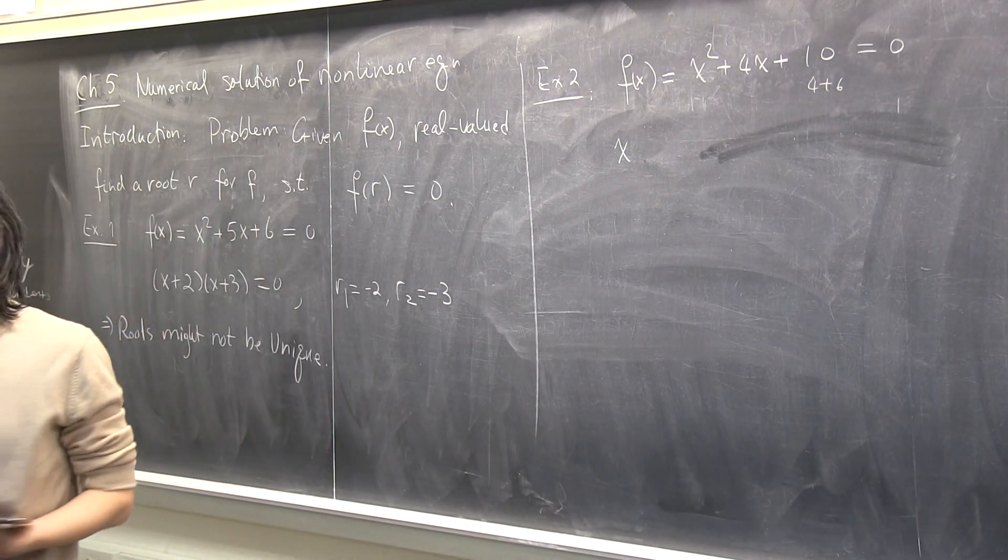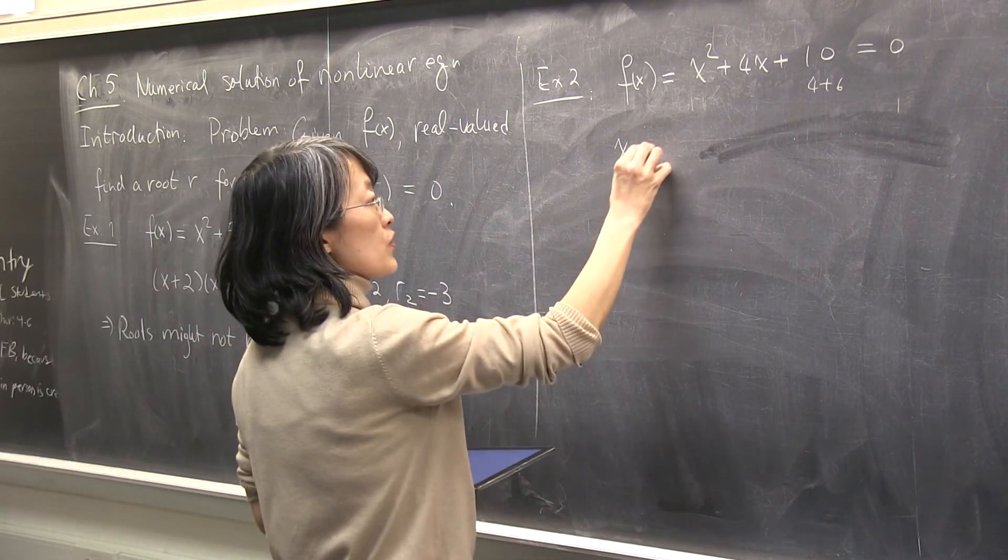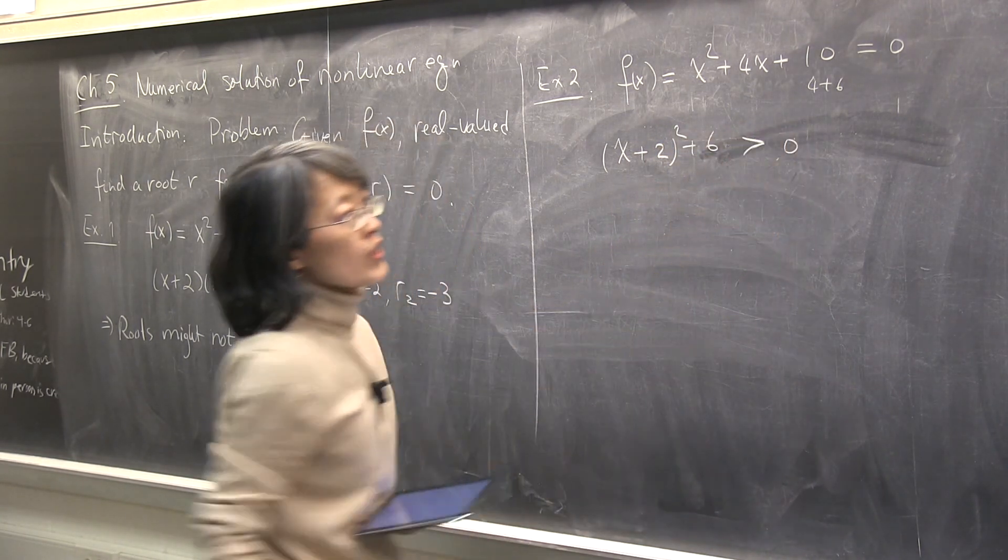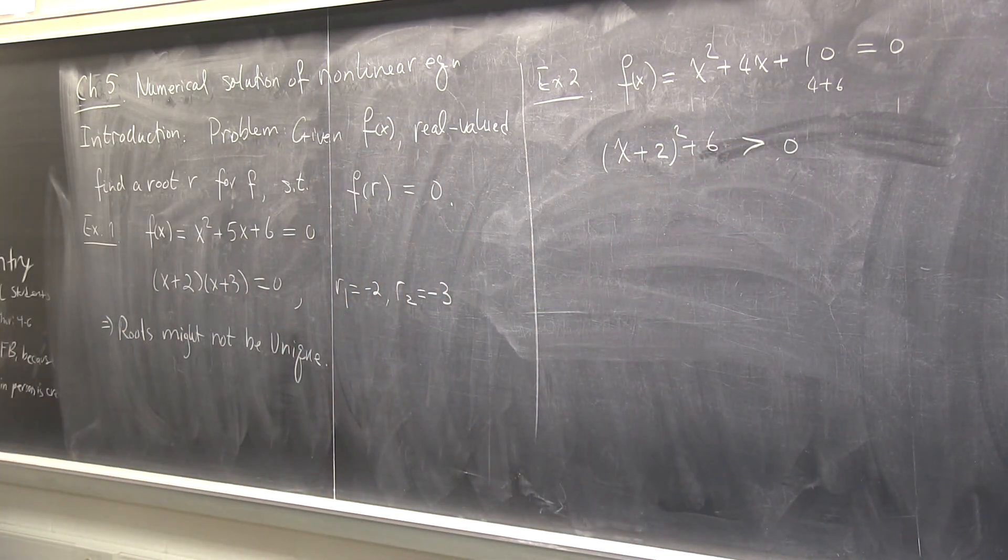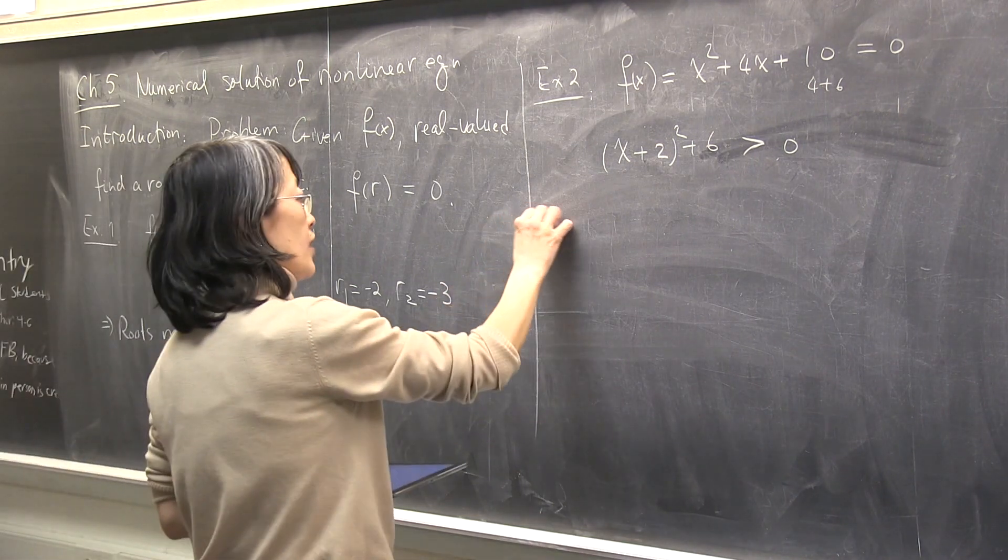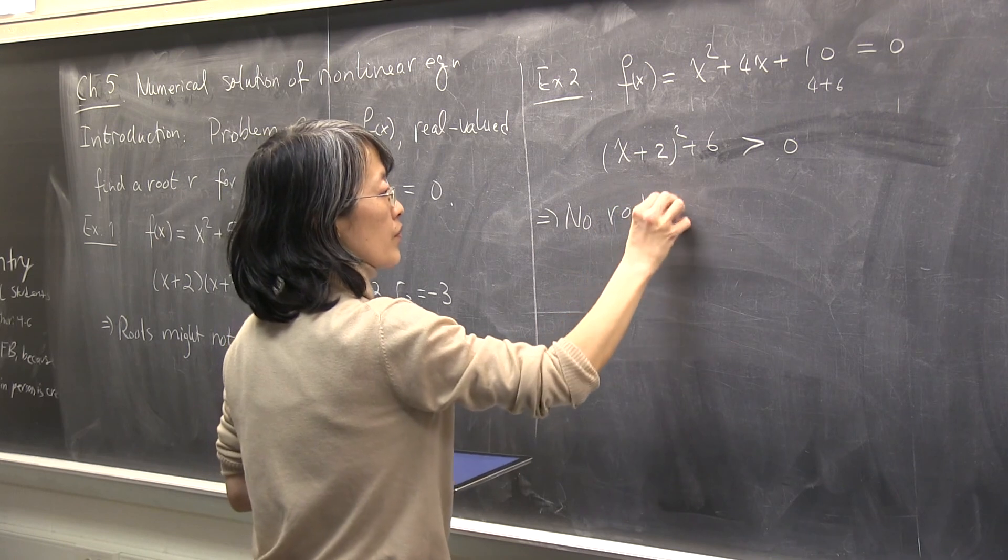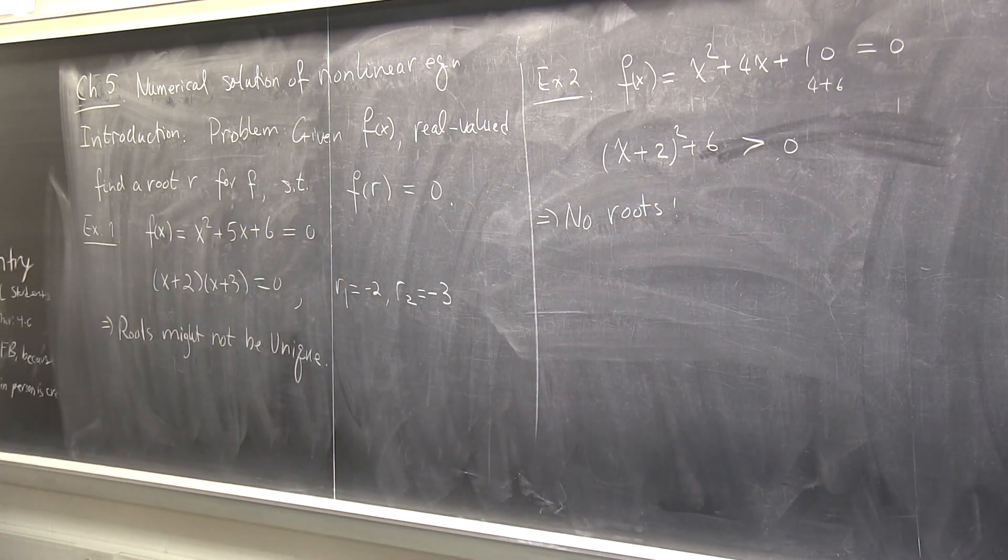Because the 4 will make a perfect square with the first two terms. And this is always strictly bigger than zero, right? So there might be no roots at all. So because it's nonlinear, anything is possible.